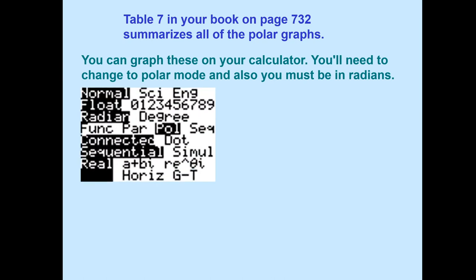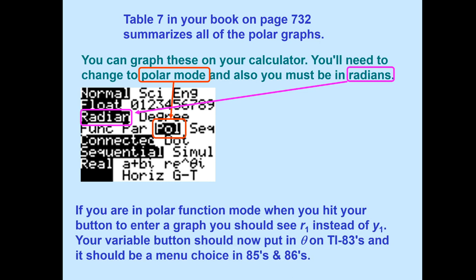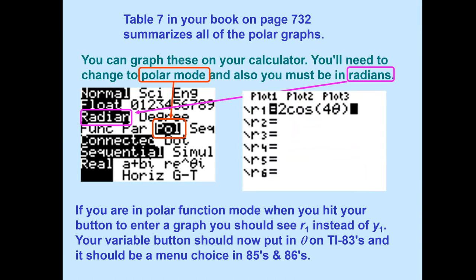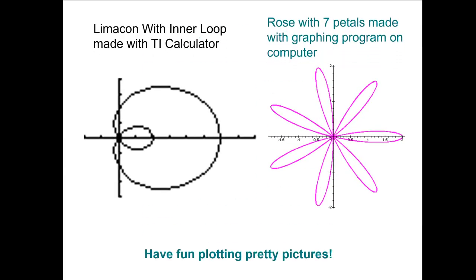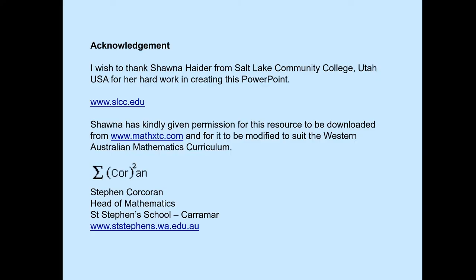You can use a graphing calculator to check your work. Go to the settings — the mode — and convert the function type to polar. Make sure the angle mode is set to radian. On a TI-83, 85, or 86, once you go to the y-equals button, you'll see r1, r2, r3 instead of the usual functions. You can enter expressions like cosine of 4 theta to see a limaçon, or a rose curve with even or odd petals. This lets you verify your manual graph matches the calculator's output.